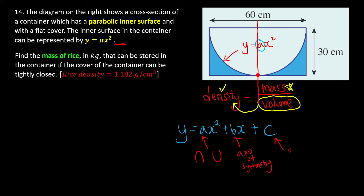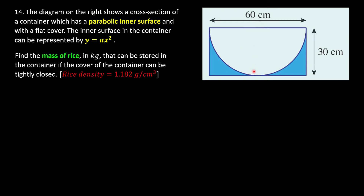'c' controls the vertical shift — whether the minimum point shifts up or down. Since there is no c term, the minimum point lies at the coordinate (0, 0) because there is no horizontal or vertical shifting. So we can now build our coordinate system with the minimum point at the origin.